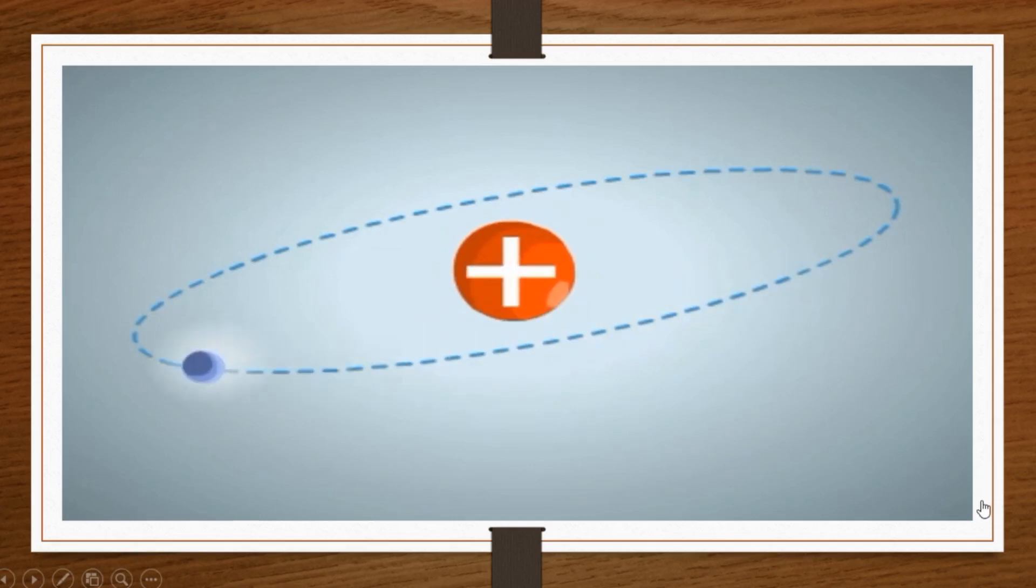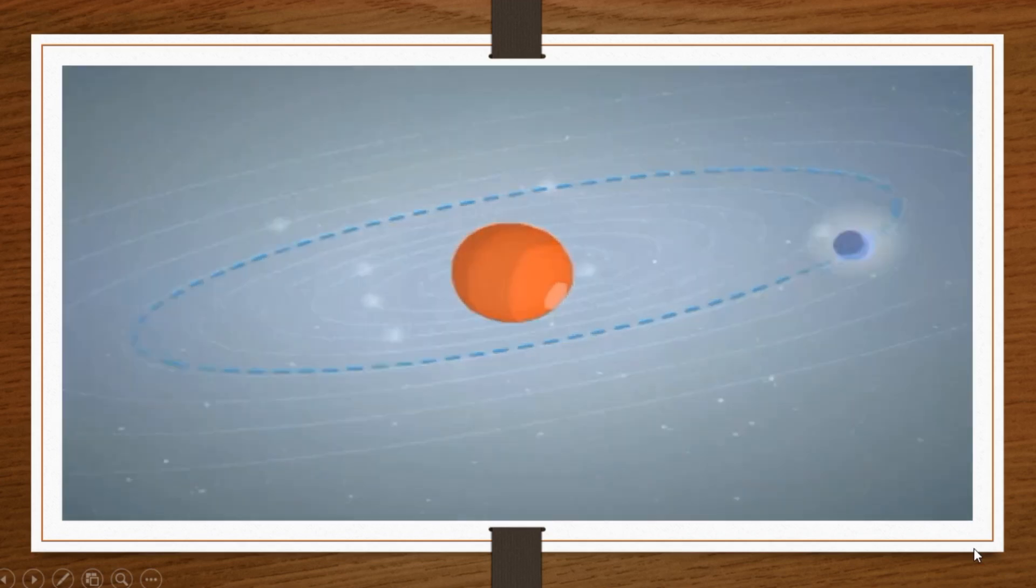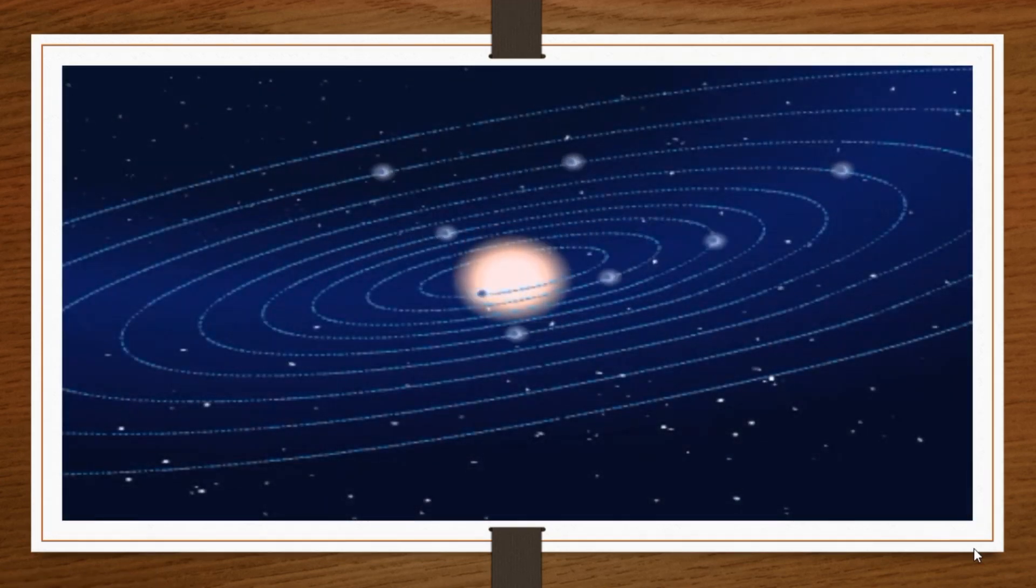Bohr's model views the hydrogen atom as a miniature solar system in which electrons circle around a positively charged nucleus in orbits of fixed size and energy.